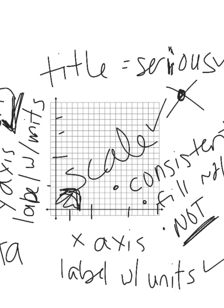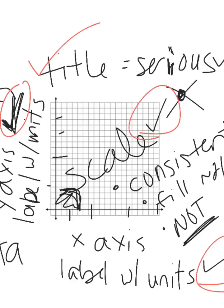So your points when drawing a graph are: title, y-axis labeled with units, properly plotted data, a scale that is consistent and fills the bulk of the graph without going off it, x-axis labeled with units — which is your independent variable — and optionally, if you need it, a key or legend that explains your graph.